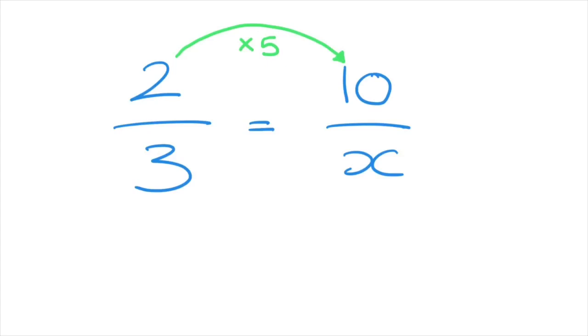And so to find the unknown denominator, which we've called x here, we need to carry out the exact same operation. So we have to do 3 times 5. And since 3 times 5 is equal to 15, we can replace this x here by 15. And there we go. We've just written the fraction 2 thirds as an equivalent fraction for which the numerator is equal to 10.